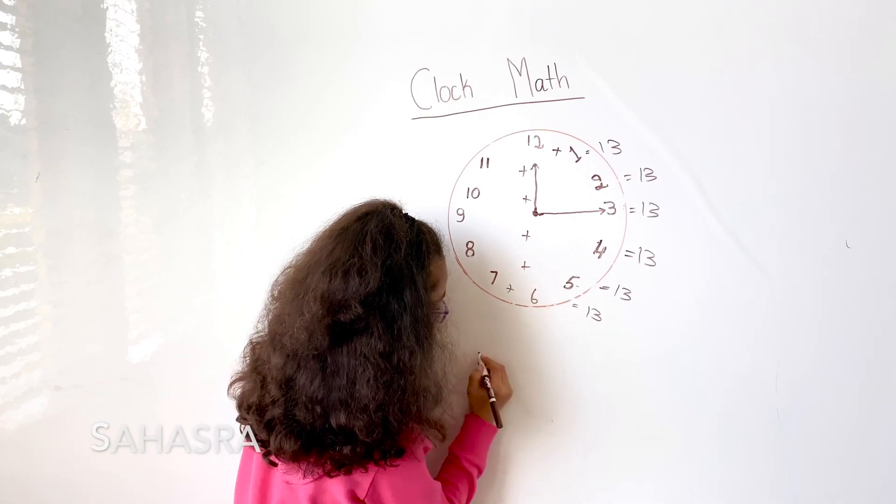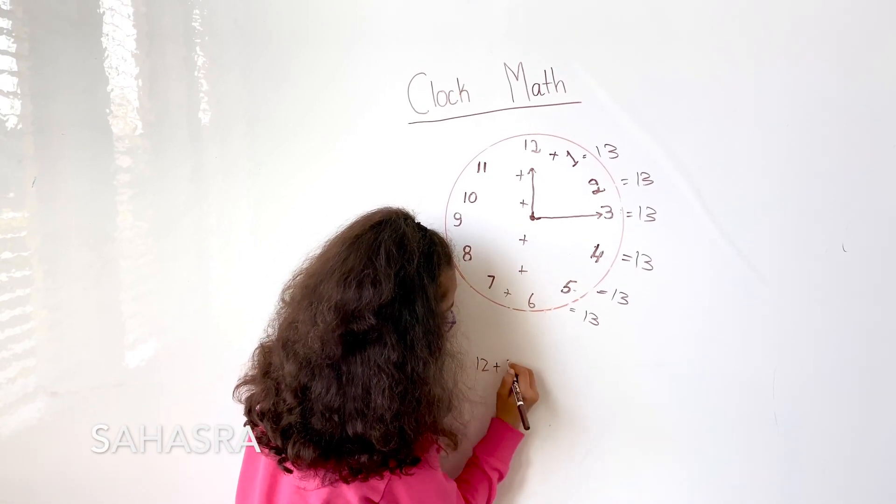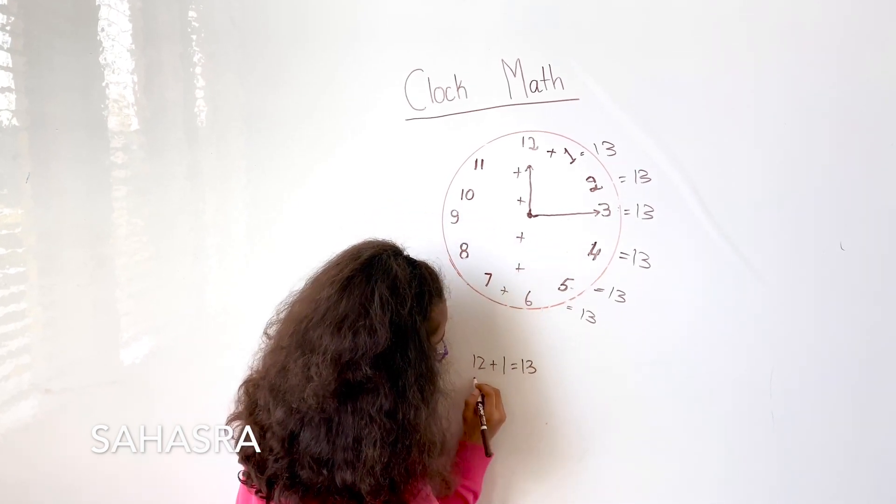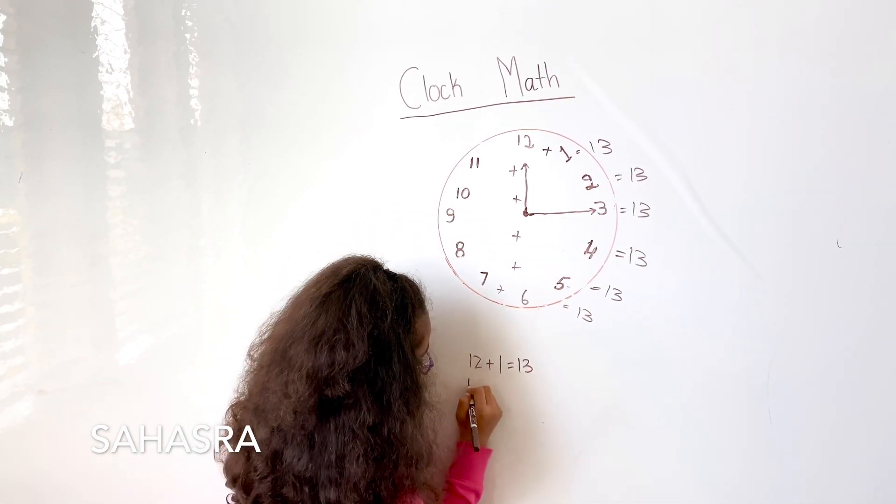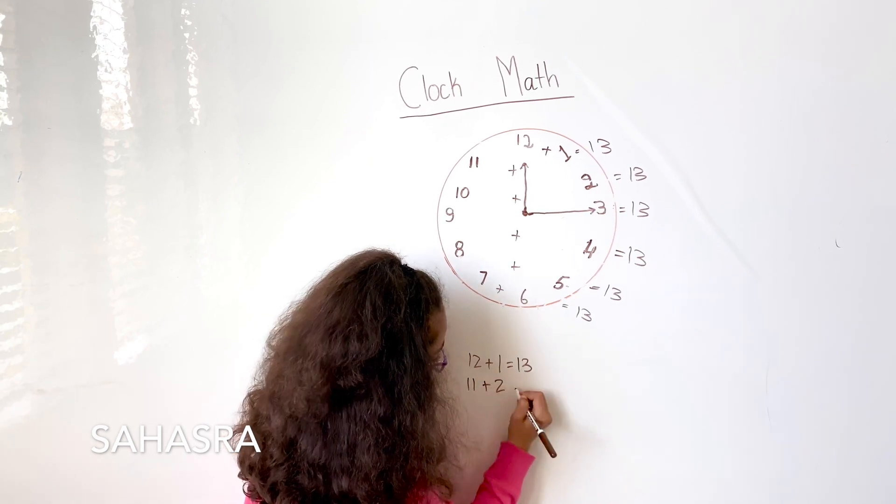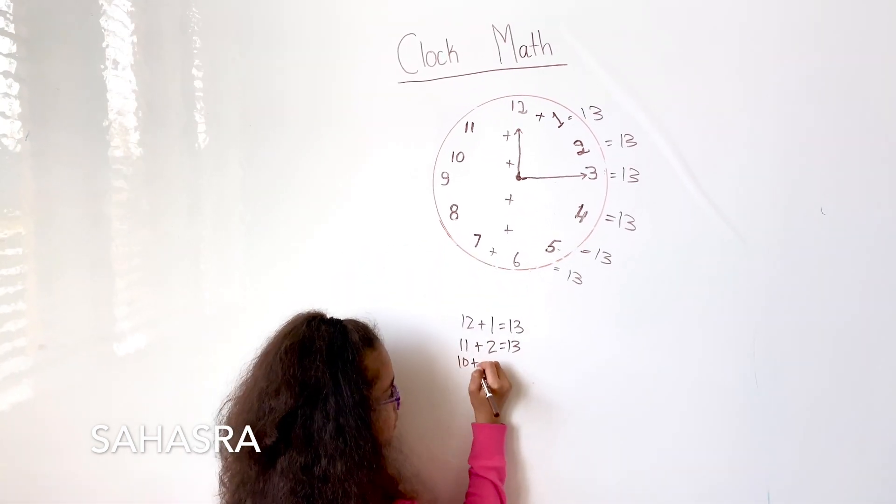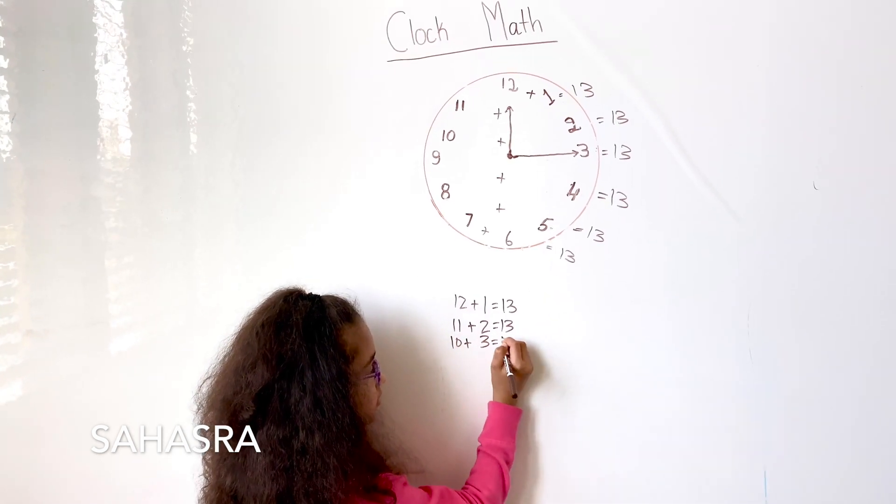12 plus 1 equals 13. And then 11 plus 2 equals 13. 10 plus 3 equals 13.